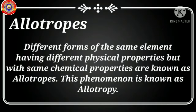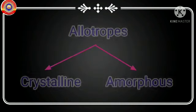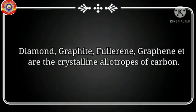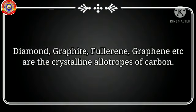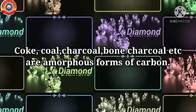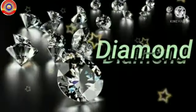The allotropes of carbon are classified into two types: crystalline and amorphous. Diamond, graphite, fullerene, graphene, etc. are the crystalline allotropes of carbon. On the other hand, coke, coal, charcoal, bone charcoal, etc. are the non-crystalline allotropes of carbon.